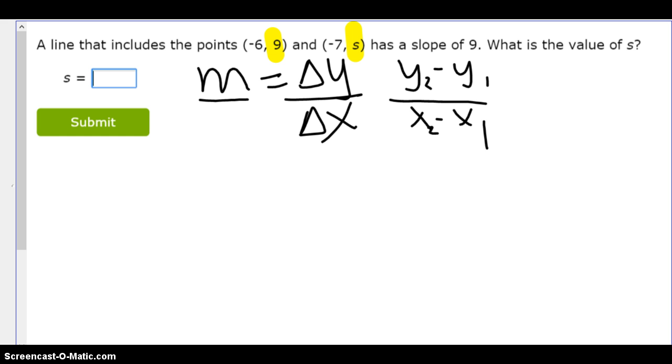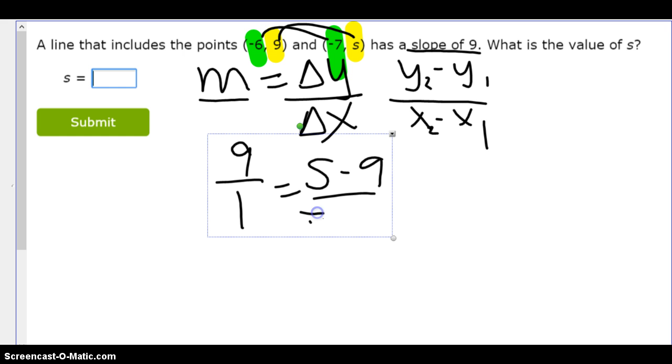So here we go. I'm just labeling or I'm highlighting them so I can see where are my Y's, where are my X's. And then I'm going to go back in and write some stuff down. Okay. So we've got Y2 minus Y1. So let's do this. And I also know that my slope is 9. So I'm going to write that as 9 over 1. And then negative 7 minus negative 6.